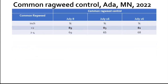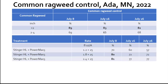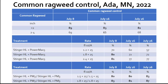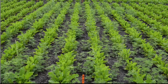Looking at the average of all applications in July for common ragweed two inches or less and two to four inches, there is a significant difference in the amount of control between those application timings. For single applications, there is a decline in control throughout the month of July. For repeat applications, the control stays consistent — if not a little better. Here is a photo of our untreated plot from our experiment in Ada. The density and population is severe — there's a lot there.